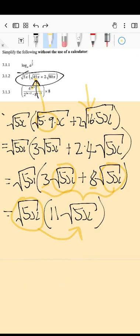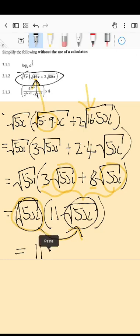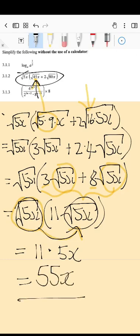So you are going to still have your 11. This multiplies with itself, so the square and the square root falls away, so you are left with your 5x. And then the 5 will multiply with 11, gives you 55. That is 55x as your final answer.